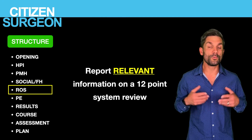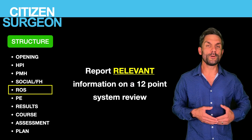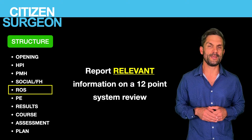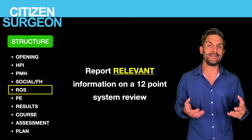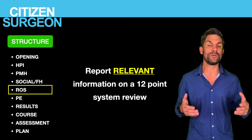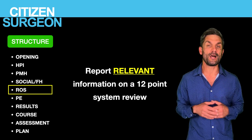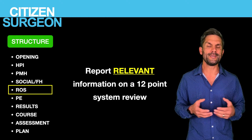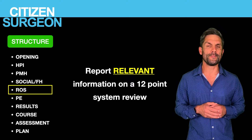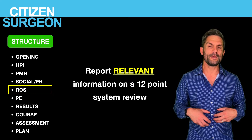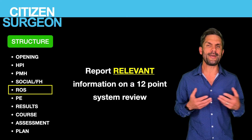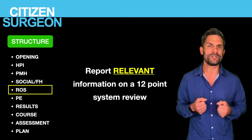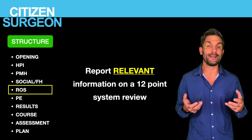How about the review of systems? We want to report relevant information from a 12-point systems review. If you have Talion O'Connor, they have a great systems review with yes-or-no questions — I'll link that in the description. Present the relevant information. For Jason, our seven-year-old with abdominal pain, nausea, and fever, you might find in the systems review that they have dysuria and it hurts when they contract their bladder — that gives you more information and may help nail the diagnosis of appendicitis.